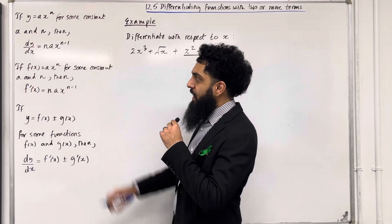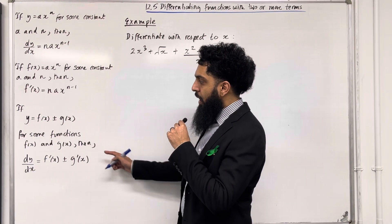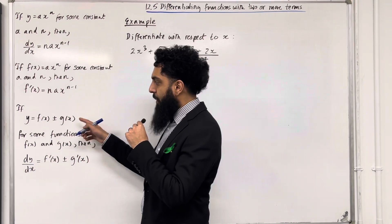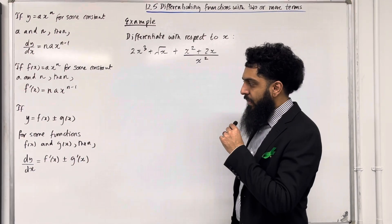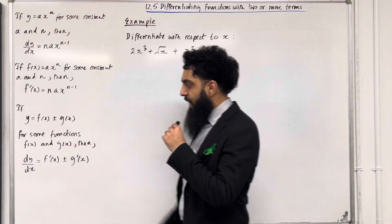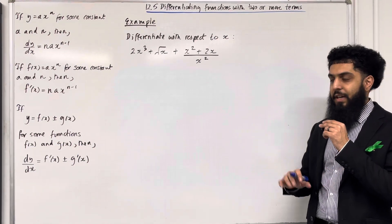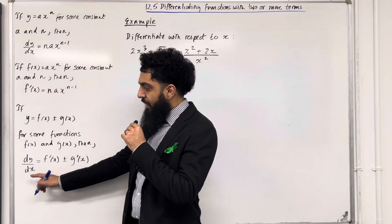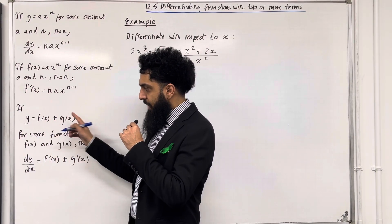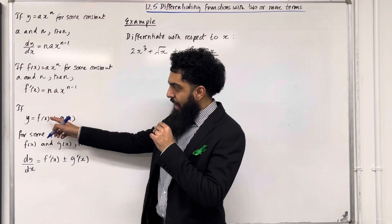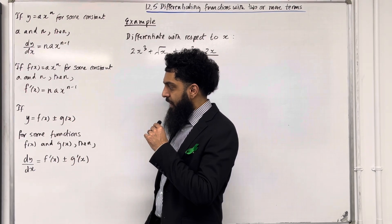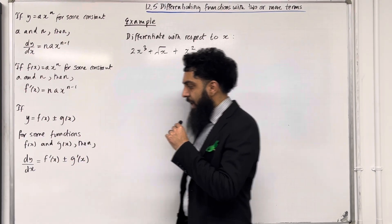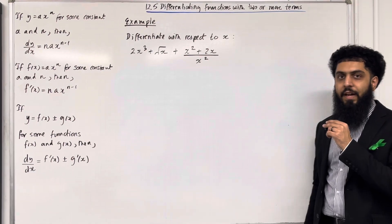This key fact was covered in my teaching video 12.3. Moving on to the next key fact: if y is equal to f(x) plus or minus g(x), for some functions f(x) and g(x), then the gradient function dy/dx is given by term-by-term differentiation. So f(x) differentiates to f'(x), plus or minus g(x) differentiates to g'(x). This is the key fact of 12.5.